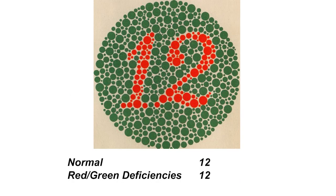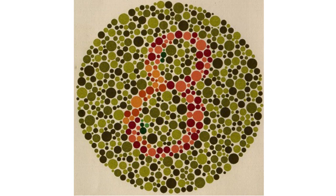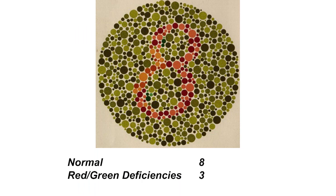The first number is 12, which is correct. If you have a red and green deficiency, you should still see a 12 here — it might be a gray shade, but you should still see it. The next one looks like an 8, which is correct. If you see a 3, you might have a red and green deficiency. We tend to have red and green deficiencies more than any other color family.